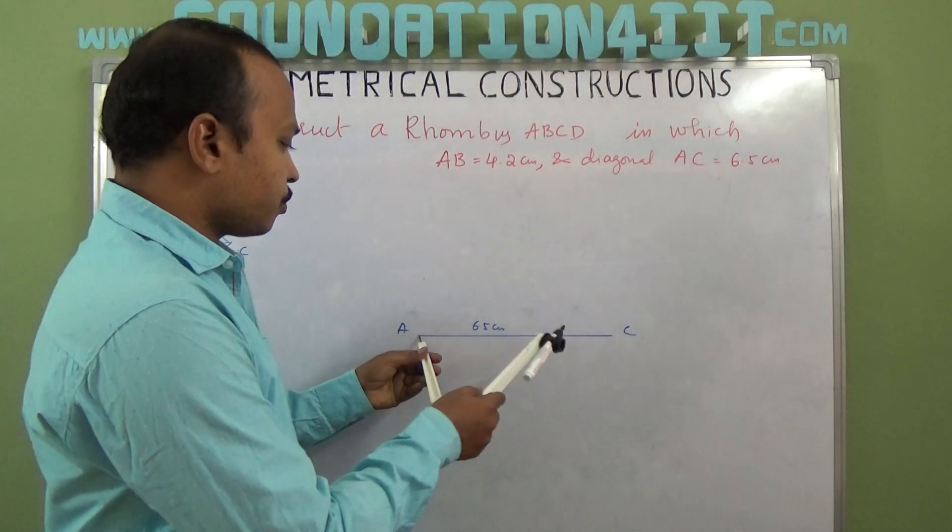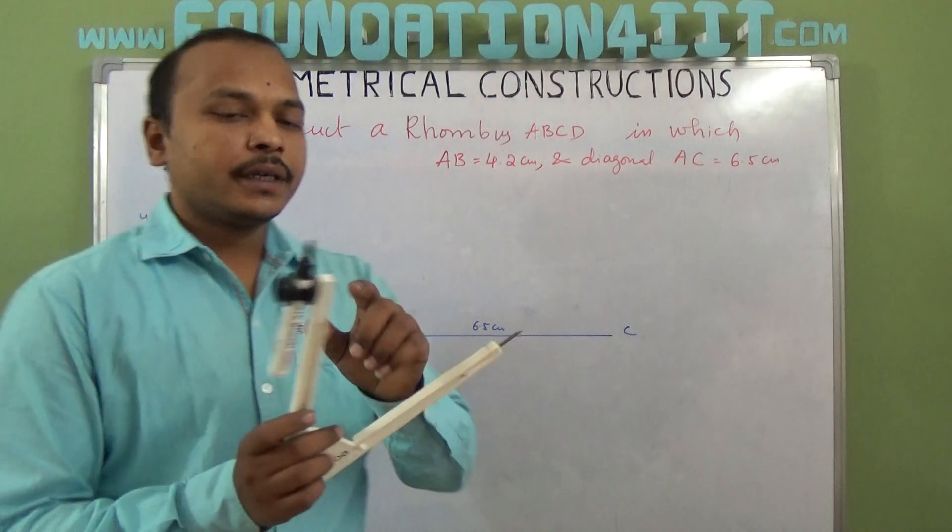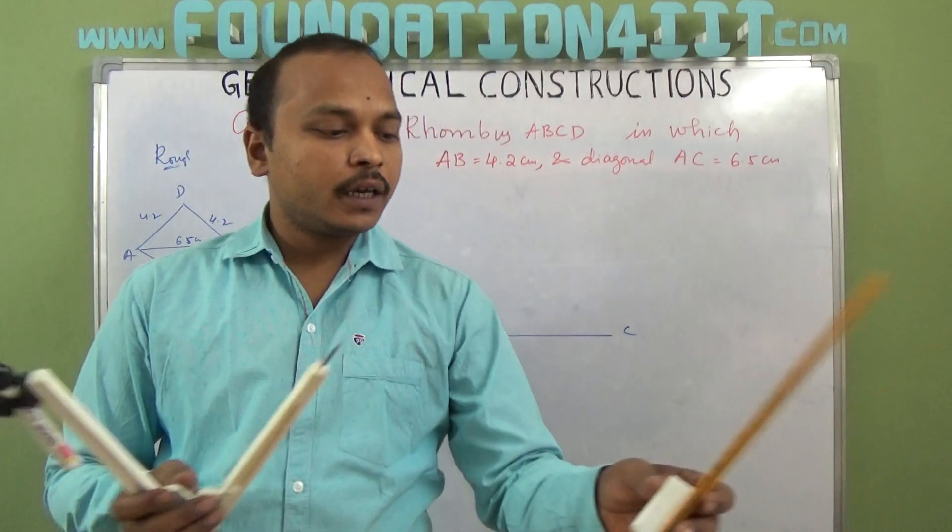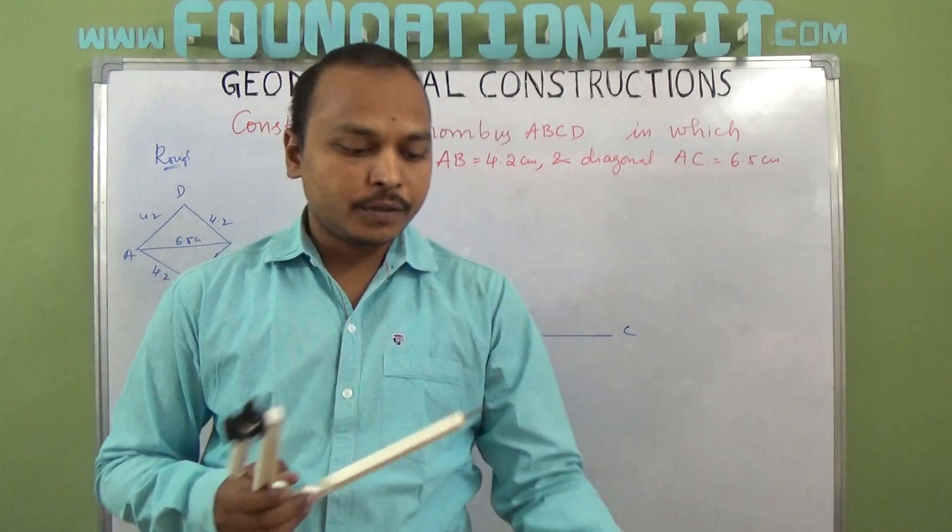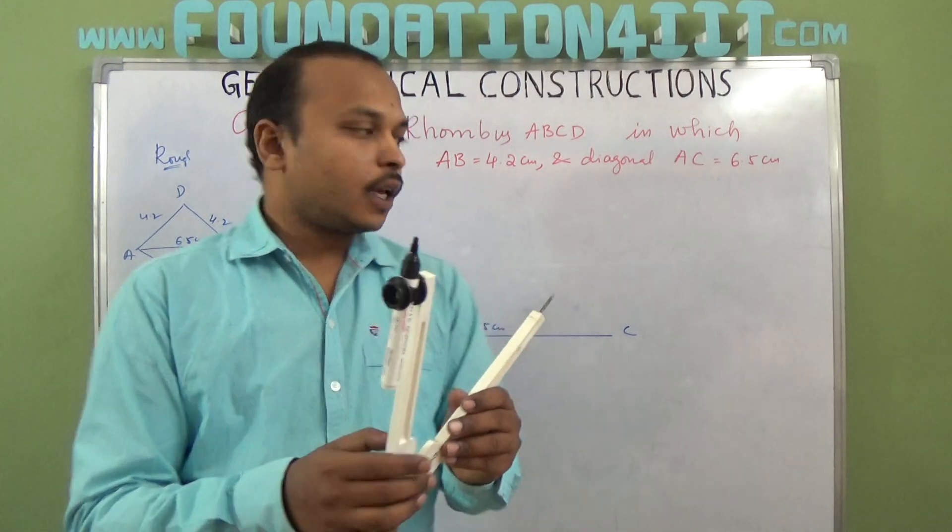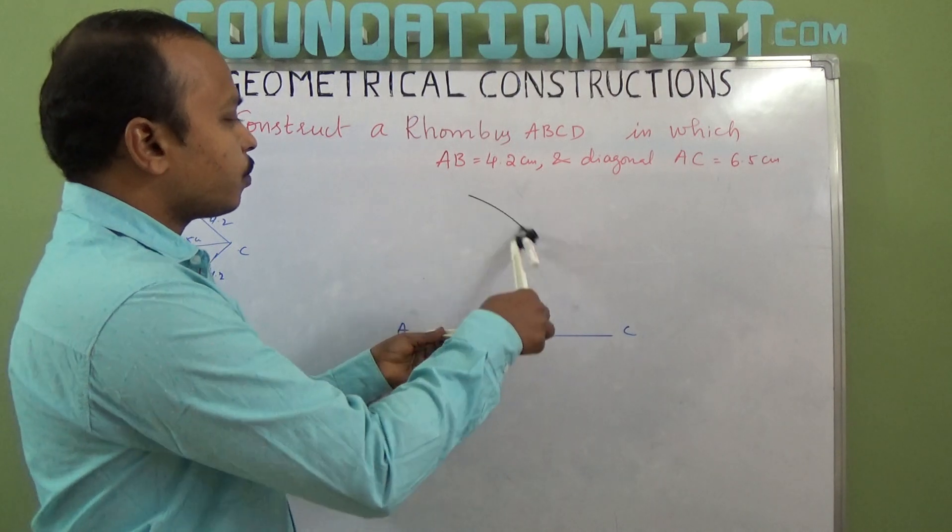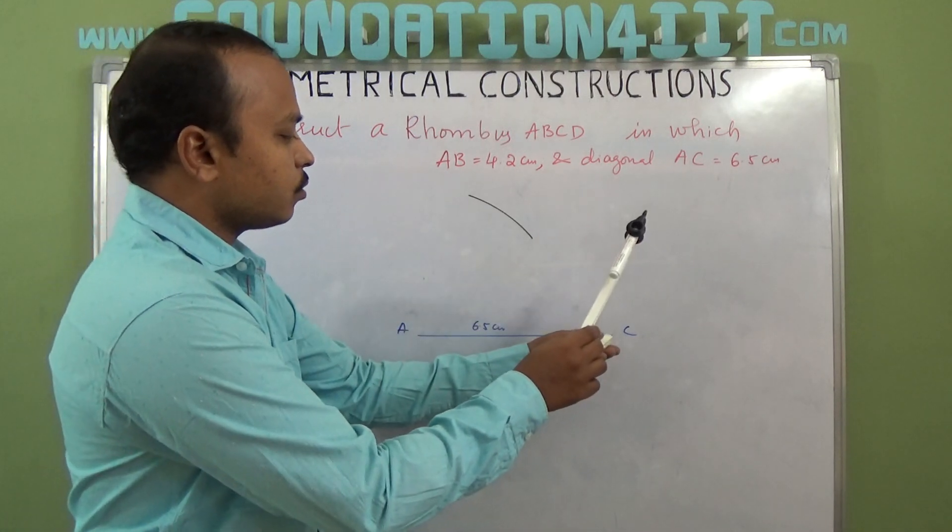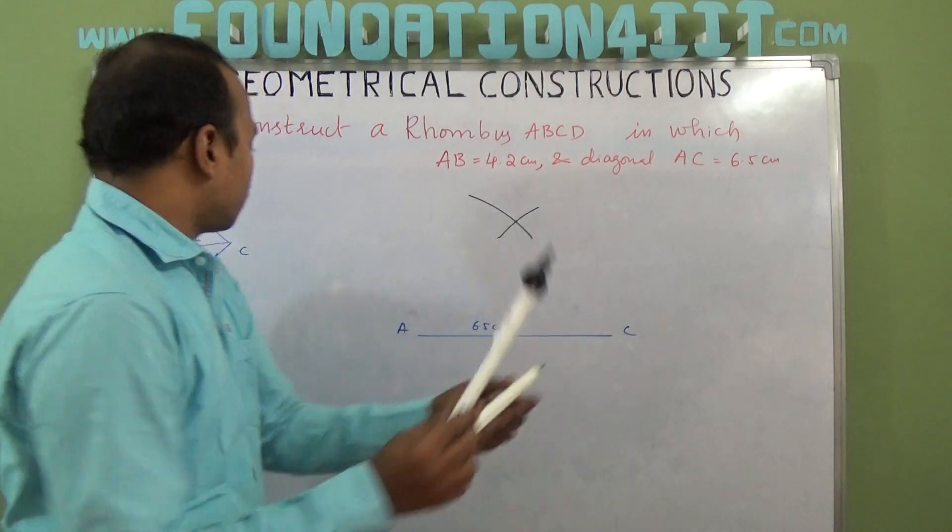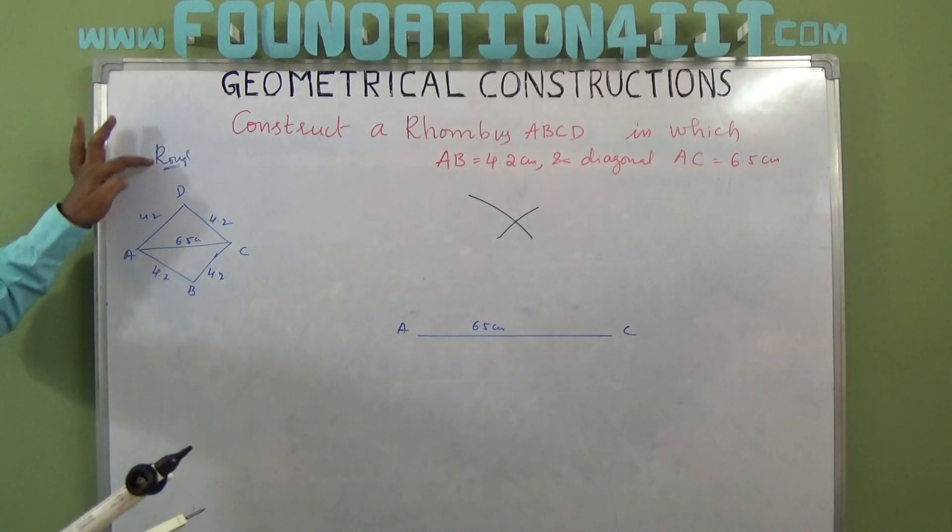A to B is 4.2 and C to B is also 4.2 centimeters. Using the scale, take 4.2 centimeters line segment and draw an arc from A to above 4.2, and from C also 4.2, because D is the same distance from A and C.